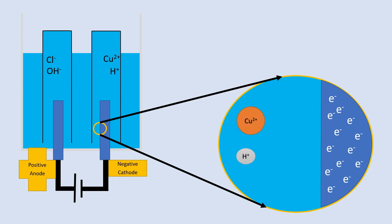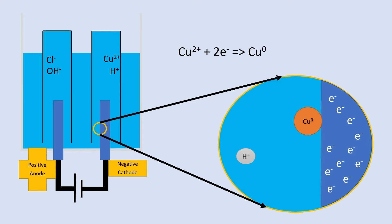The copper ion is attracted, picks up two electrons, and is turned into copper metal which is deposited on the surface. The summary reaction of this is: Cu²⁺ + 2e⁻ → Cu (copper metal).